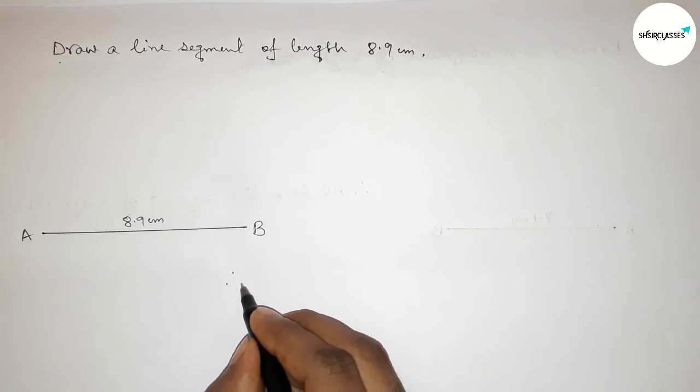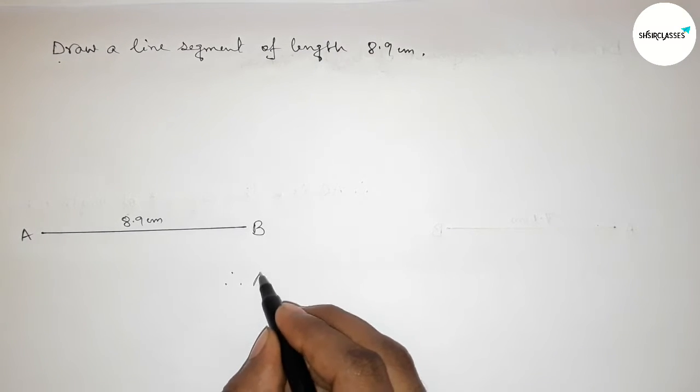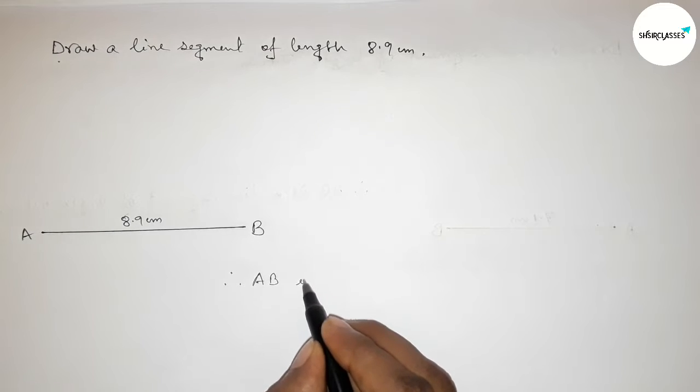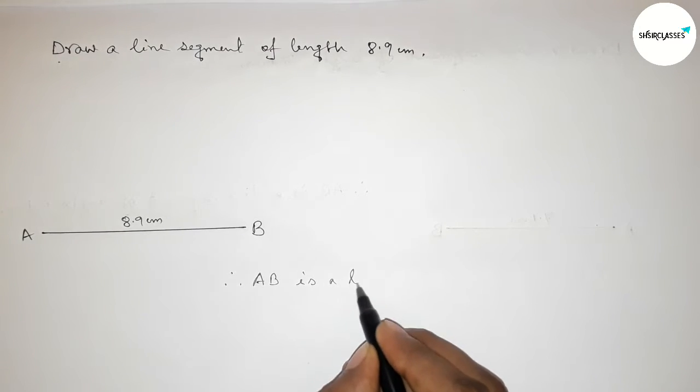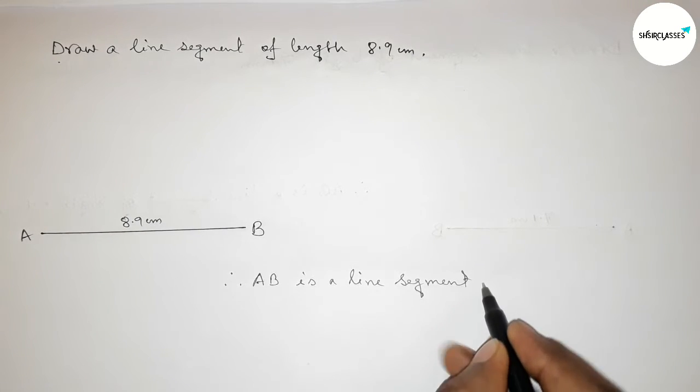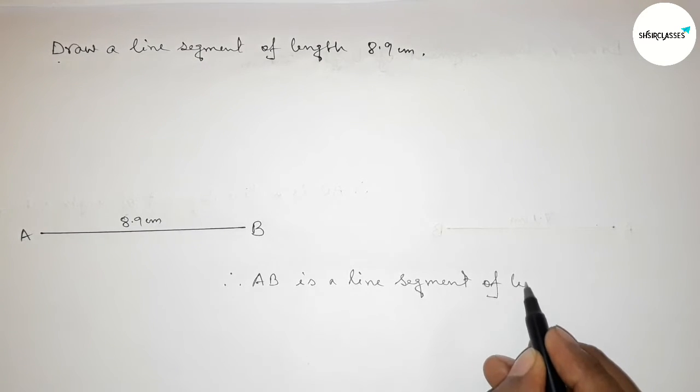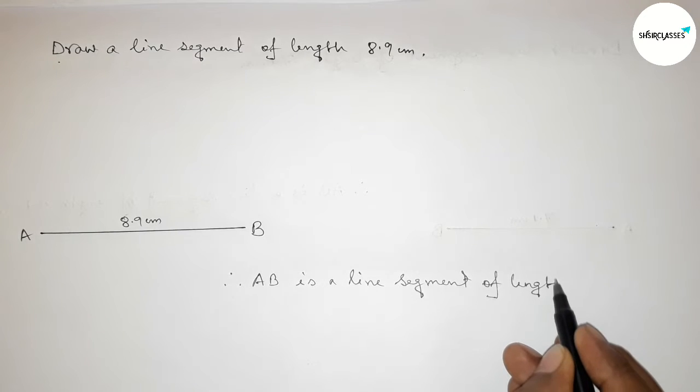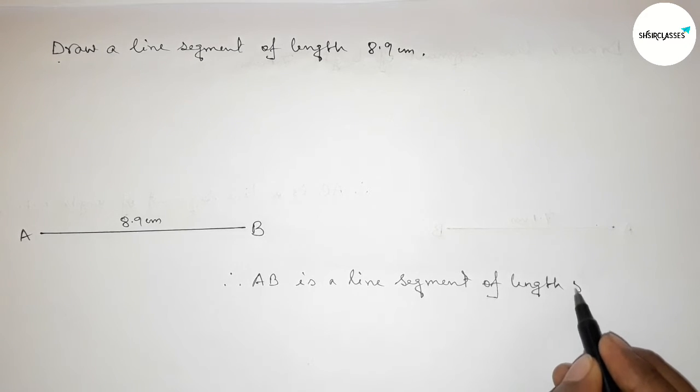Now we can say that AB is a line segment of length eight point eight—sorry, eight point nine centimeters. And by this way you can draw this line with the help of a scale.